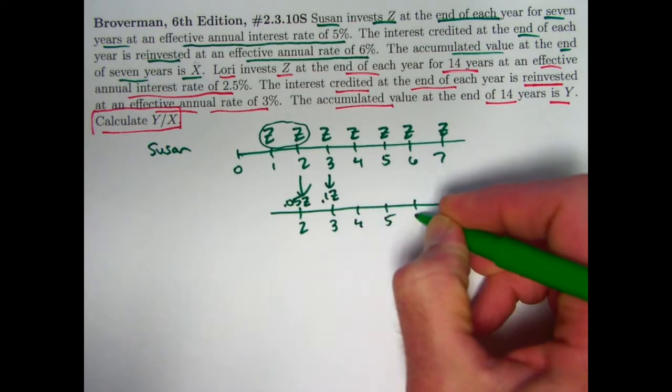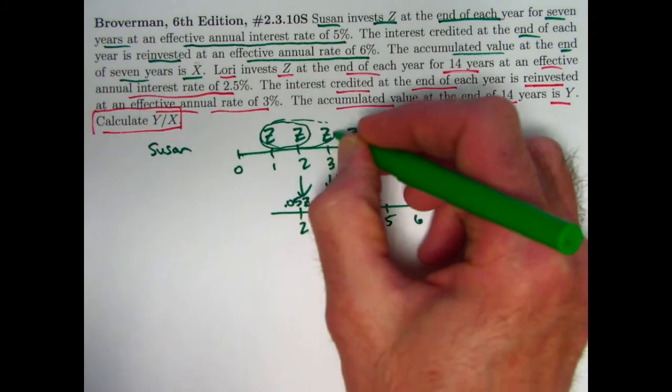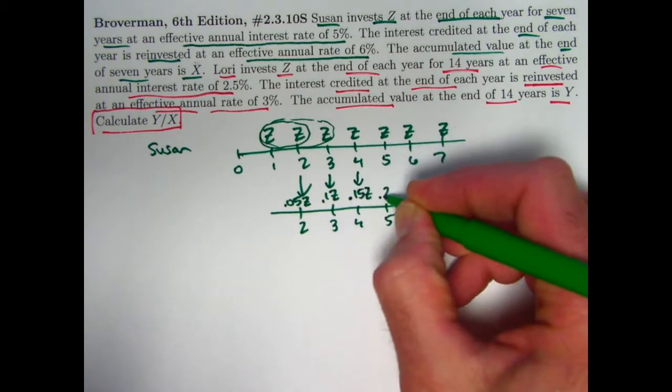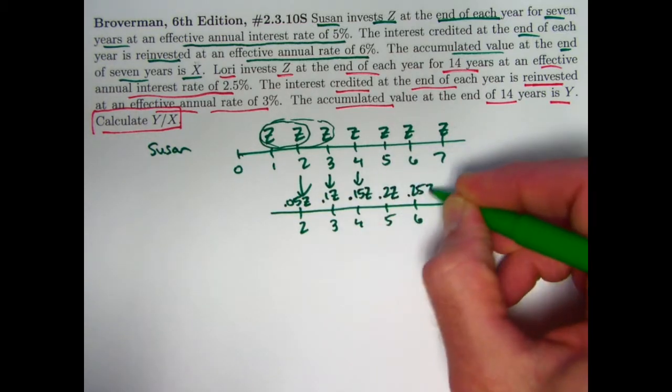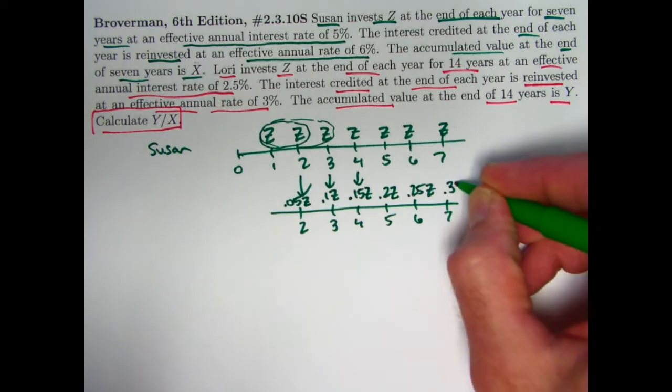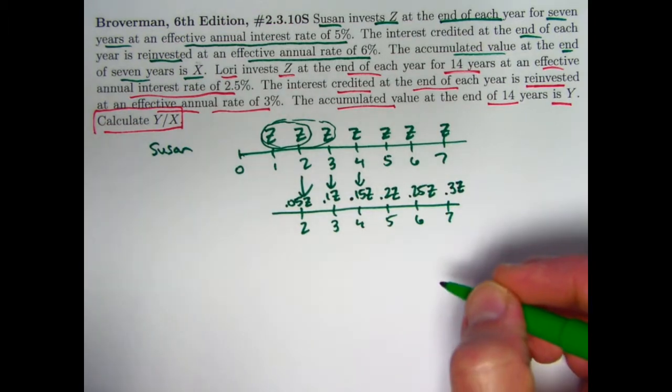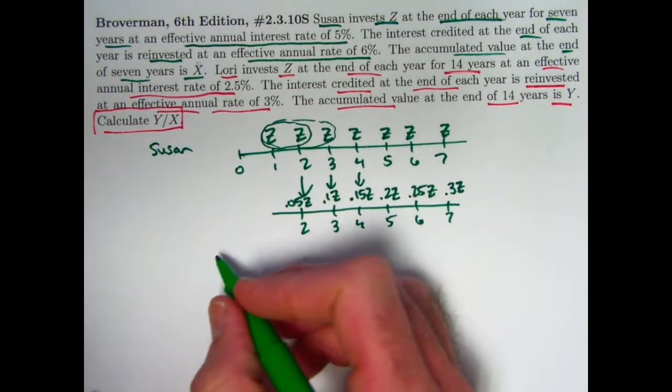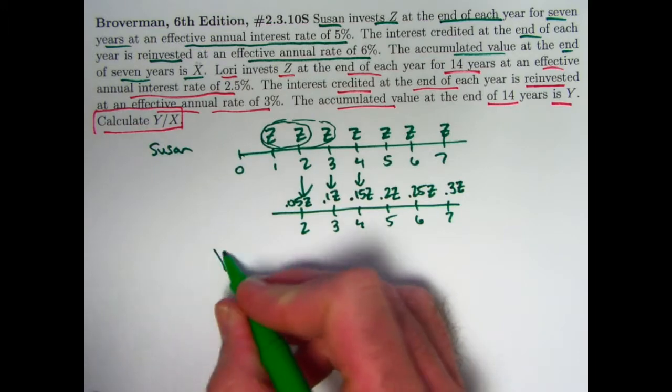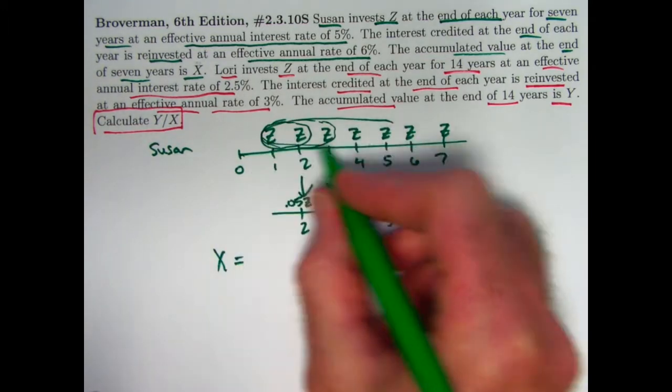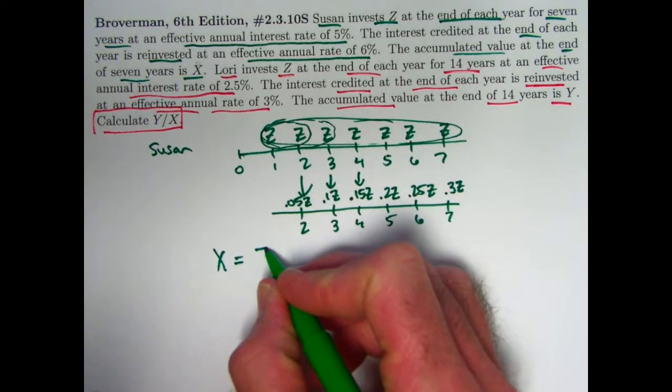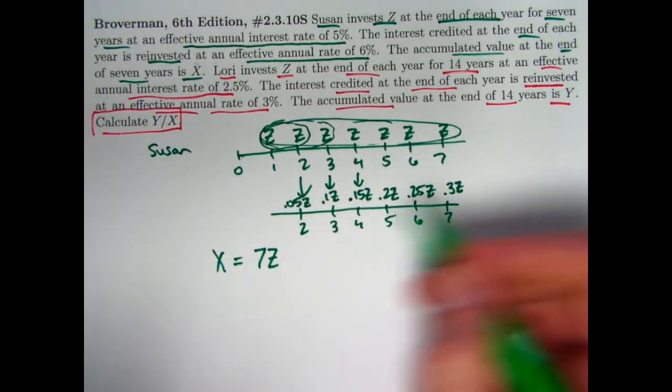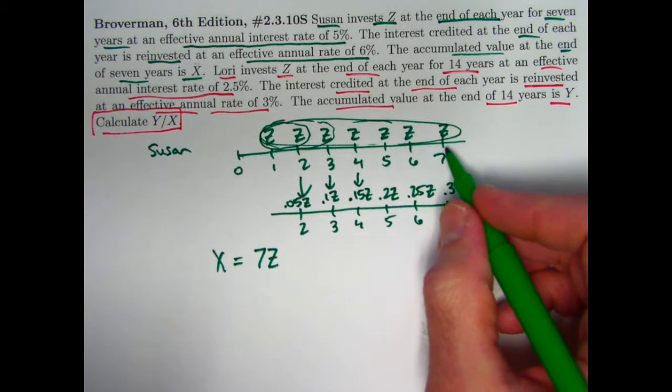Then it will be 3Z that's sitting in here between time 3 and 4. She'll earn 5% of that, which is 0.15Z. That's what gets reinvested at time 4, etc. At the end, at time 7, she deposits 0.3 times Z into this different account. Alright, let's write down an expression for the accumulated value for her account. The name for that quantity is X. First of all, from the first account, she's got all 7 of these deposits, 7 times Z. Since she reinvested the interest in a different account, she doesn't have any interest left over from this account. 7Z is the amount or value of this account at time 7.